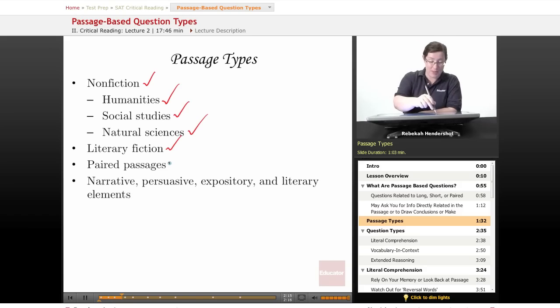You can also expect to encounter paired passages—two passages that have something to do with each other. Maybe they talk about the same thing, but they will take different approaches, so you'll want to contrast them. These passages will contain narrative or storytelling, persuasive, expository or explanatory, and literary elements, and you may be asked about any of those elements.